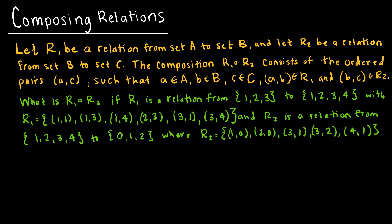Another way that we might choose to combine relations is by composition. Essentially what composition tells us is that the point (A,C) will be in the composition of R1 composed with R2 if (A,B) is an element in R1 and (B,C) is an element in R2. This makes way more sense when you look at an example, so let's look at the example I have laid out for us.